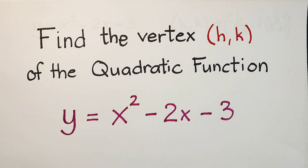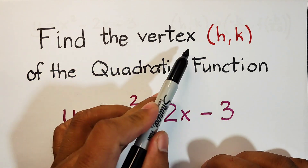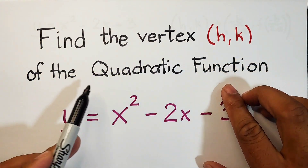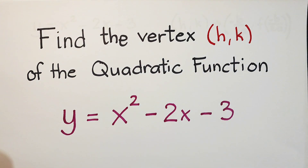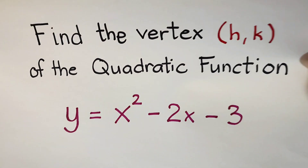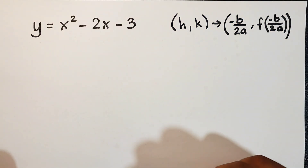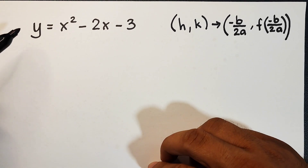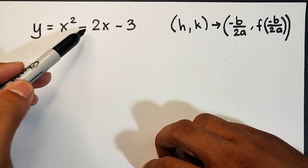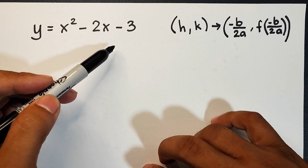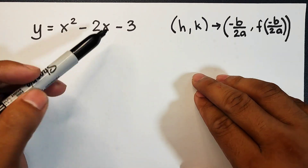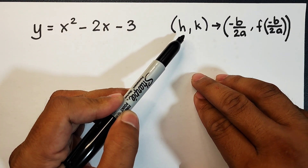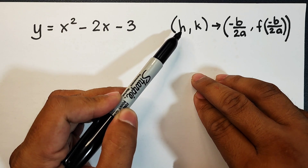Hi guys, it's me Teacher Gone. In today's video we will talk about how to find the vertex of a quadratic function. This will be a quick video. We will try to find the vertex of a given quadratic function, and what we have here is y is equal to x squared minus 2x minus 3.